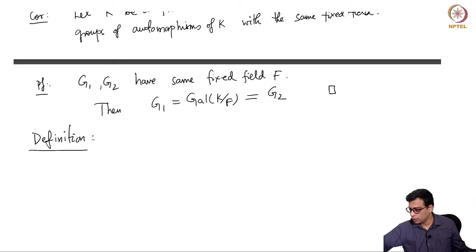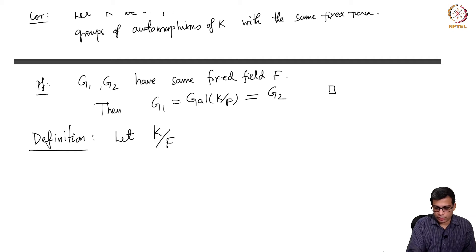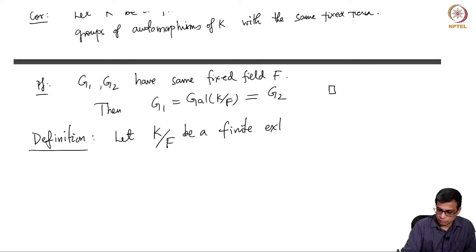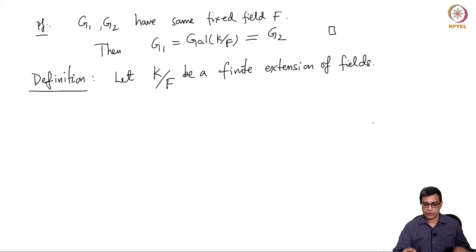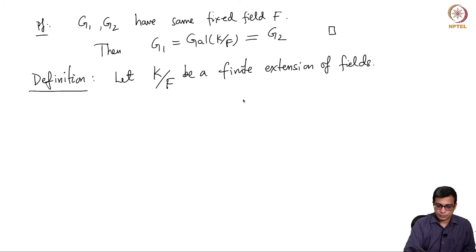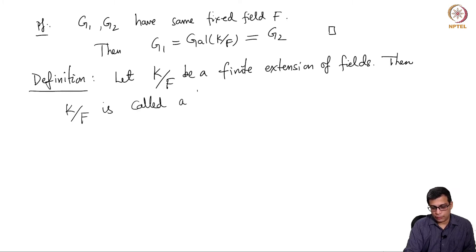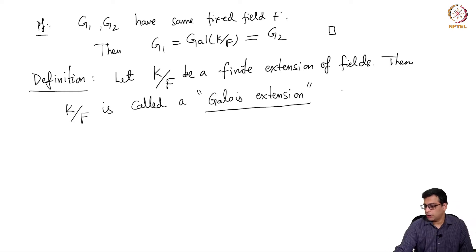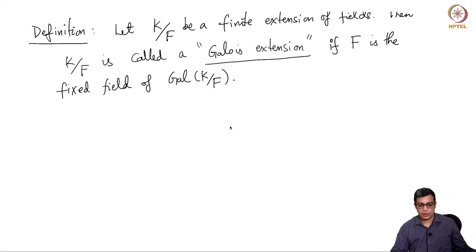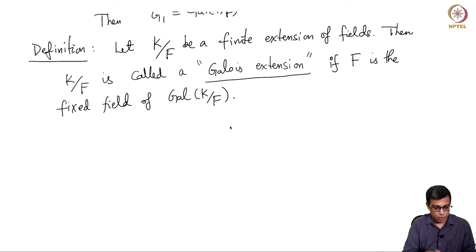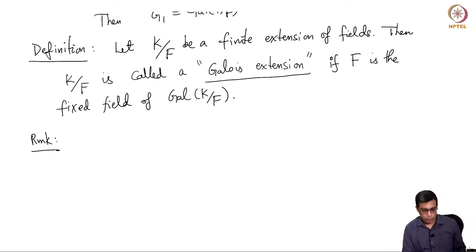Now let me give the most important definition of the whole course. Let K over F be a finite extension of fields. Then K over F is called a Galois extension if F is the fixed field of Gal(K/F).